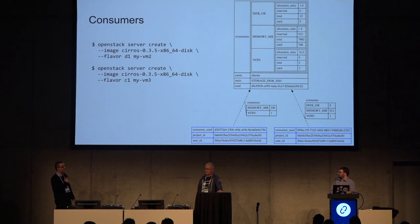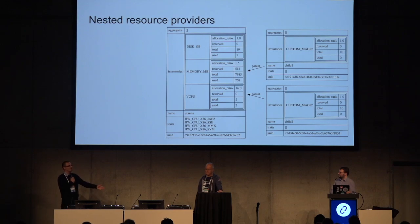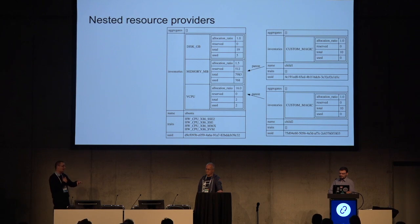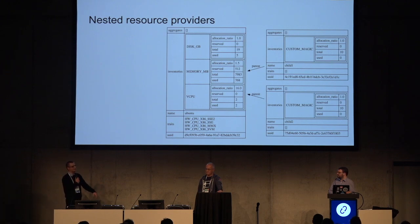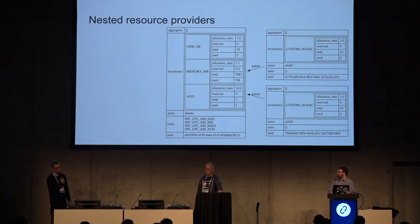Then there are complications — your hardware is more complex. Your compute host will have more than one physical network device, and if each device provides some bandwidth, you want to express them as separate resource providers, because you cannot consume from both at the same time for the same virtual NIC. Those physical NICs are represented as two separate providers, but you still want to express that they belong to the same compute host. This creates a tree in Placement of resource providers, where the compute host is the root resource provider and there could be many layers of child providers under it.